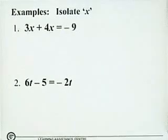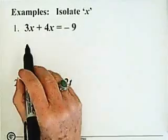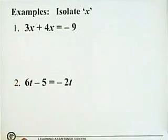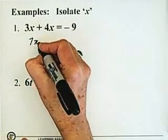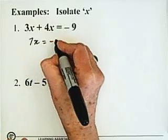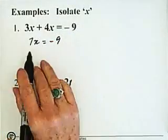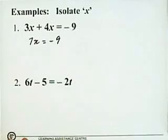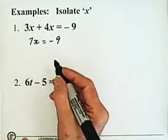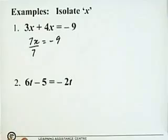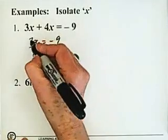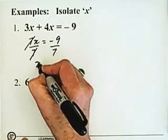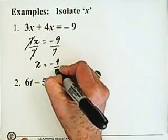Now I'm just going to work on some questions here. We have 3x plus 4x, so we're going to add these two like terms. The 3 plus 4 add together, we end up with 7x. That equals minus 9. The whole point of working on this equation is to solve for x. 7 is multiplied by x, so we divide by 7 on the left side. Make sure to divide by 7 on the right side as well. These two cancel and we're left with x equals minus 9 over 7.